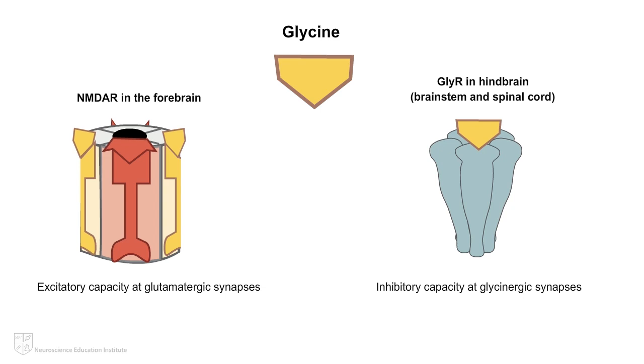which are primarily located at glycinergic synapses in the hindbrain. Although this inhibitory function of glycine is certainly important, we will be focusing on glycine in its capacity as a coagonist at glutamatergic synapses in this animation.